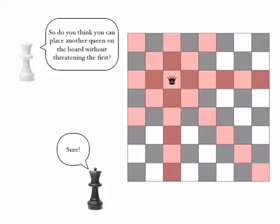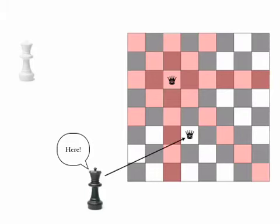Still, if you have a look, you can see plenty of locations where I could potentially place another queen. For instance, here's one location that's not shaded in pink and is therefore not threatened, in this case, by the first queen.